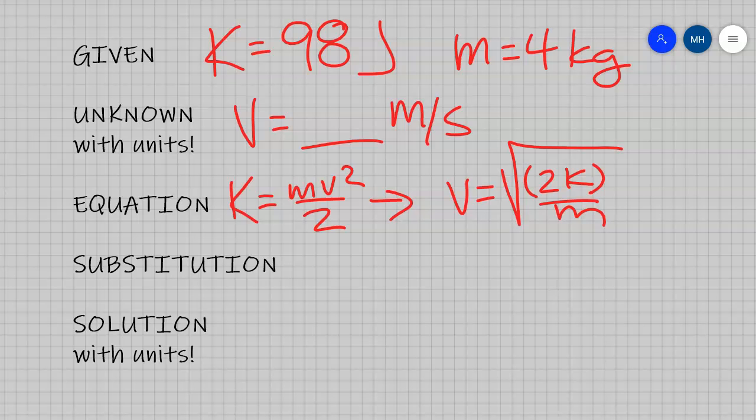So now we're going to do some substitution. We're going to do the square root of 2 times 98 over 4. And when you run that through your calculator, 7 meters per second. We know that because it's the same numbers from the first problem.